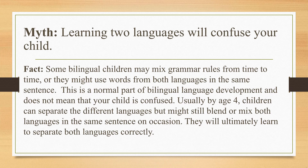Myth number five: learning two languages will confuse your child. This is a myth that, unfortunately, many well-meaning teachers often convey to parents. The fact is, some bilingual children may mix grammar rules from time to time or use words from both languages in the same sentence. This is a normal part of bilingual language development and does not mean that the child is confused. Usually by age four, children can separate the languages but might still blend both on occasion. They will ultimately learn to separate both languages correctly.